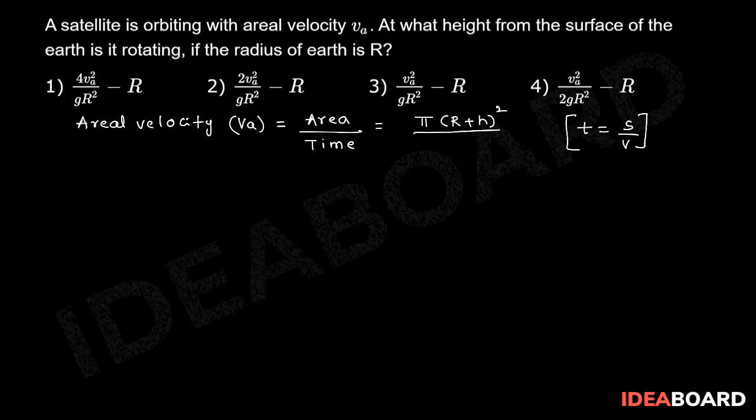So here the displacement is 2 pi into r plus h by V. So taking simplification, this is pi into r plus h whole square by 2 pi into r plus h into V.